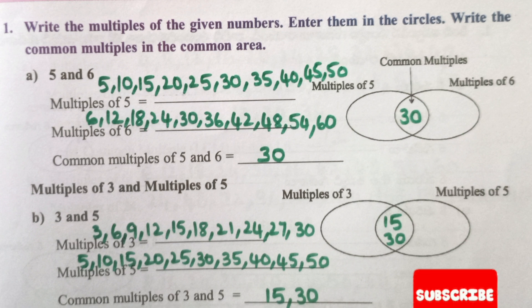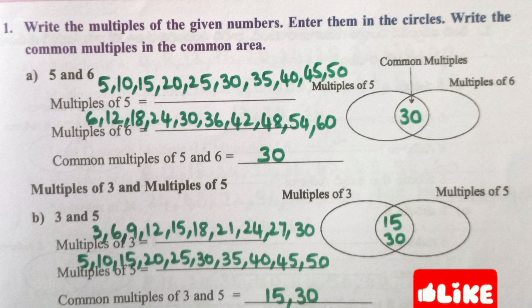5 and 6. Multiples of 5: 5, 10, 15, 20, 25, 30, 35, 40, 45, 50.